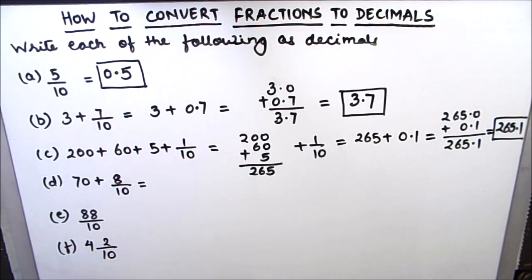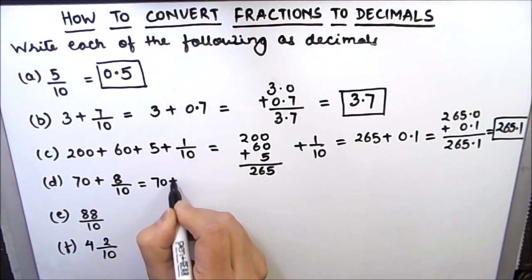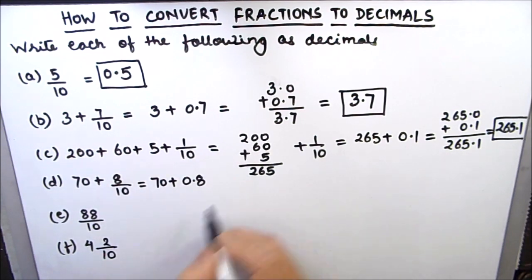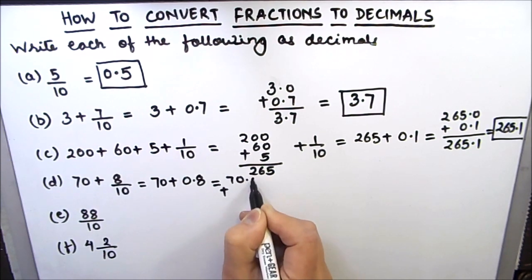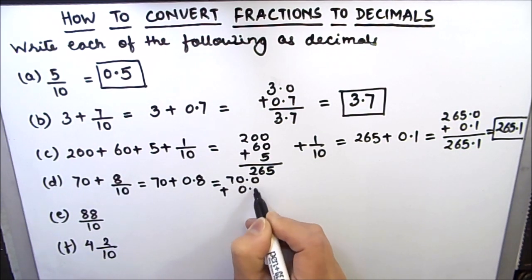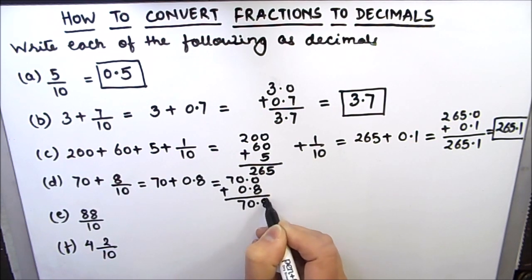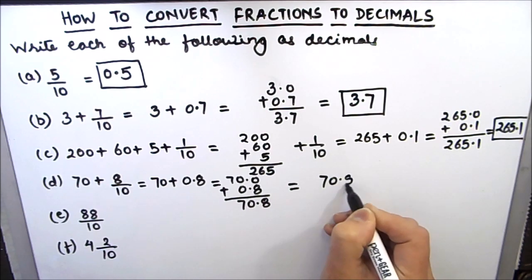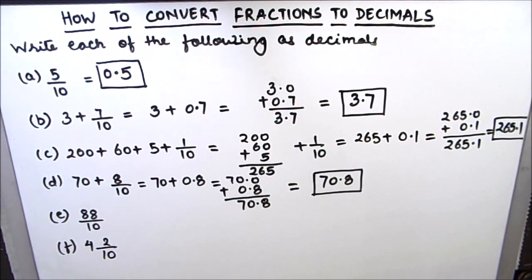The next one is 70 plus 8 by 10. We will write 70 as is, and 8 by 10 will be 0.8. Now we will add the two numbers: 70.0 plus 0.8. So we will get 70.8. So our final answer is 70.8. We will box the final answer and then move to the next one.